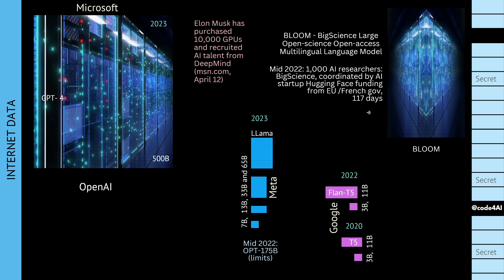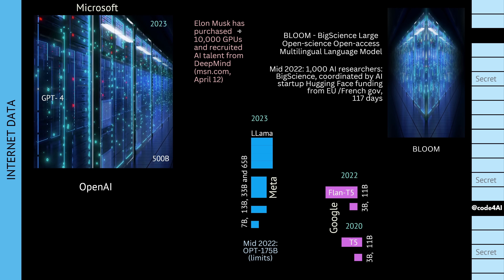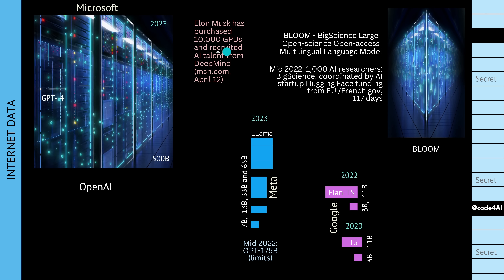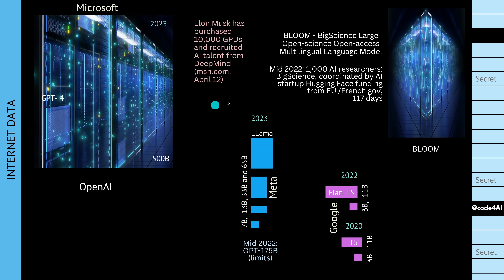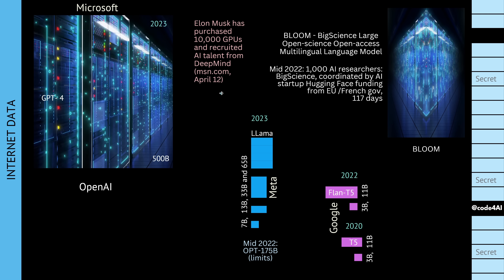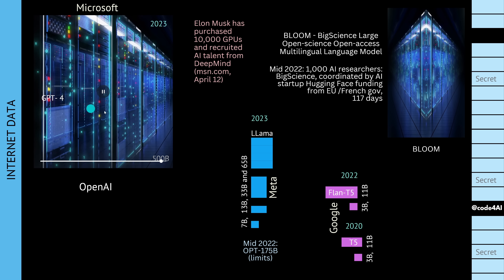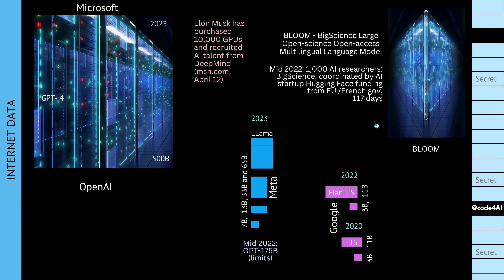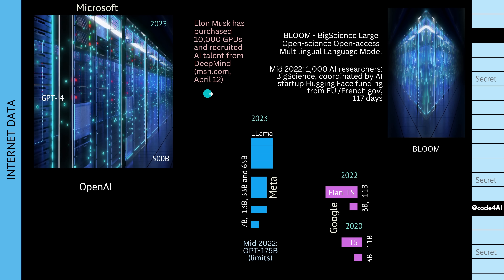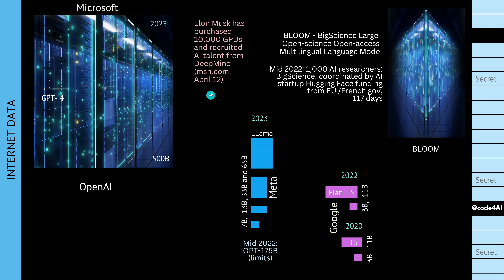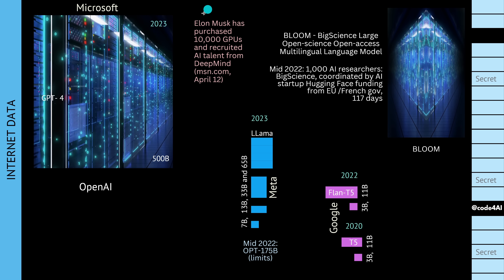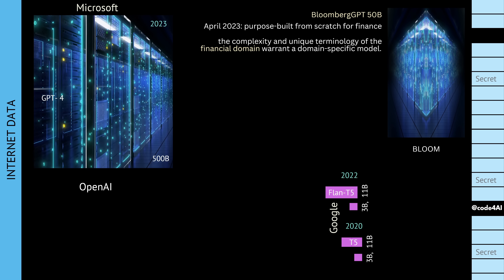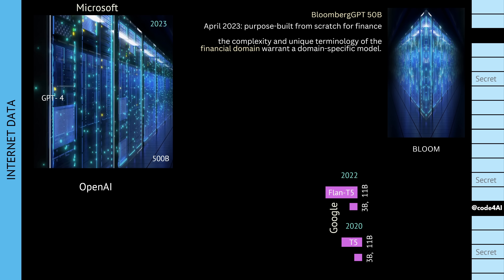Interestingly, I just read that Elon Musk purchased 10,000 GPUs and recruited AI talent from DeepMind — which is roughly what you need to train GPT-4 or its successor. After signing the letter calling for a six-month pause on GPT development, Elon Musk purchased 10,000 GPUs. Coincidence? Beautiful.